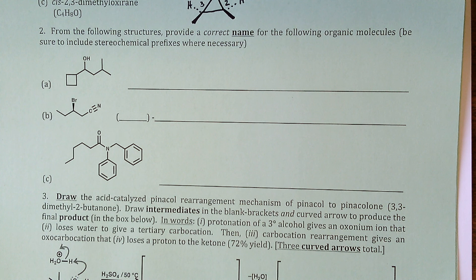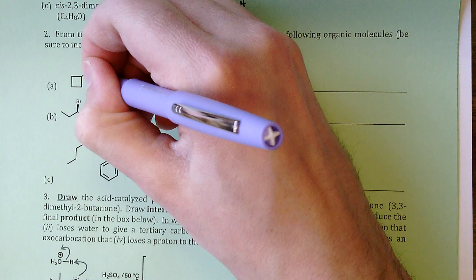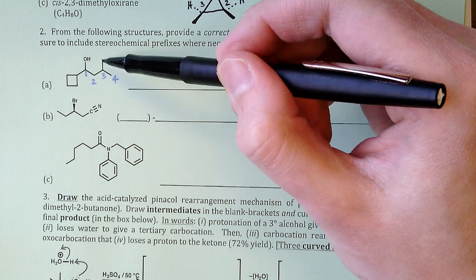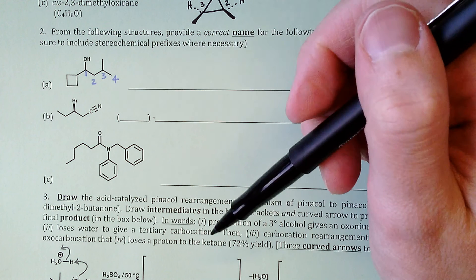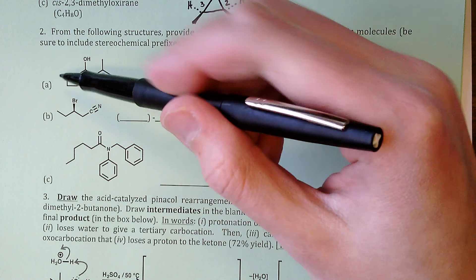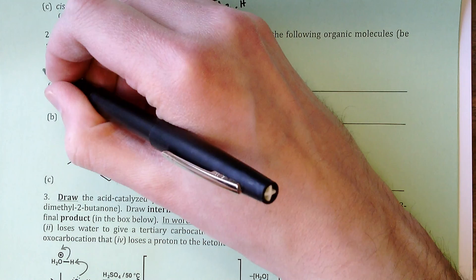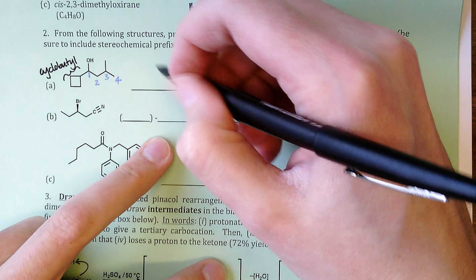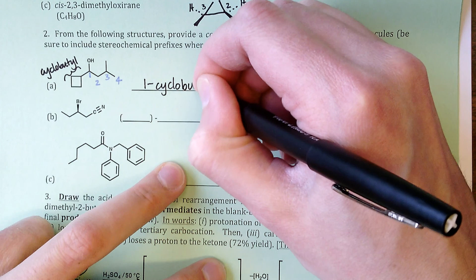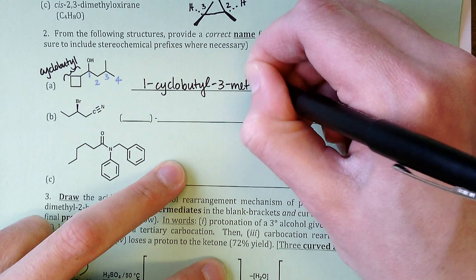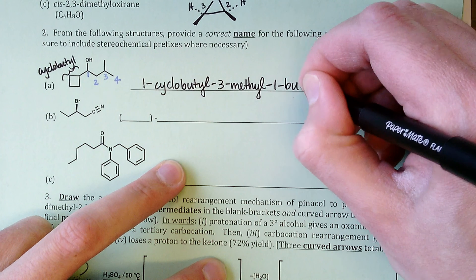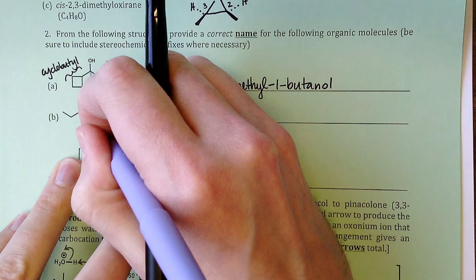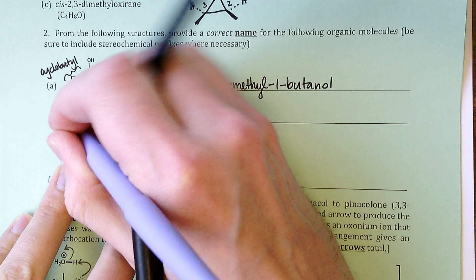Now, structure to name. For the first one, this is a secondary alcohol, so we number the carbon with the OH as fast as possible. Note that the pentyl substituent off of the cyclobutane ring would not be named as such because there are five carbons coming off the four-membered ring, so cyclobutane is named as a cyclobutyl substituent. This gives us 1-cyclobutyl-3-methyl-1-butanol.